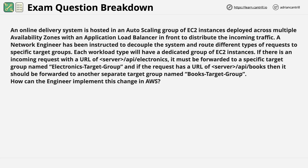Let's read through the question in the same way that you would have to do in the exam. An online delivery system is hosted in an auto-scaling group of EC2 instances deployed across multiple availability zones with an application load balancer in front to distribute the incoming traffic. A network engineer has been instructed to decouple the system and route different types of requests to specific target groups. Each workload type will have a dedicated group of EC2 instances. If there is an incoming request with a URL of server/API/electronics, it must be forwarded to a target group named electronics-target-group. And if a request has a URL of server/API/books, then it should be forwarded to another target group named books-target-group. How can the engineer implement this change in AWS?